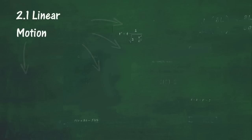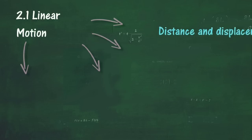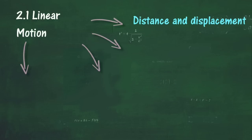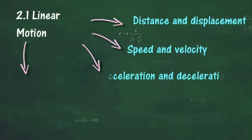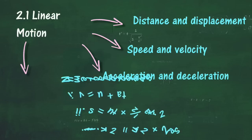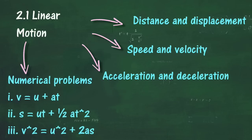In Section 2.1, we will learn about Linear Motion. At the end of this section, you should be able to: Define Distance and Displacement, Define Speed and Velocity, State that Average Velocity, Calculate Speed and Velocity, Define Acceleration and Deceleration, Calculate Acceleration or Deceleration, and Solve Problems on Linear Motion with Uniform Acceleration using Linear Motion Equations.